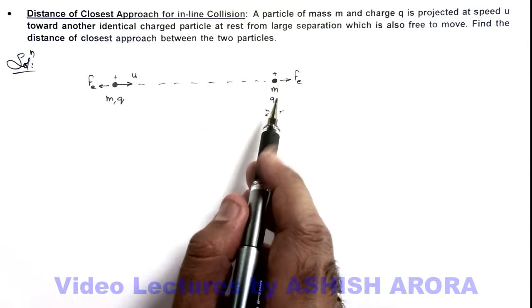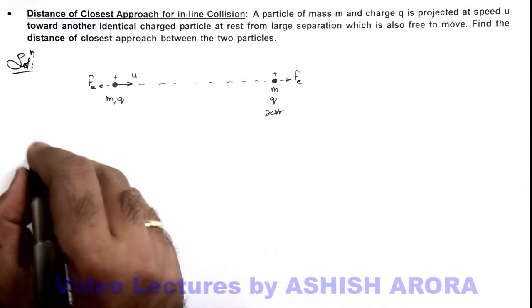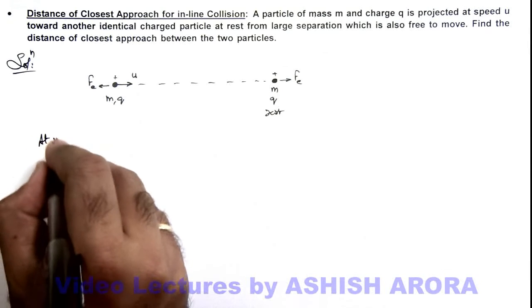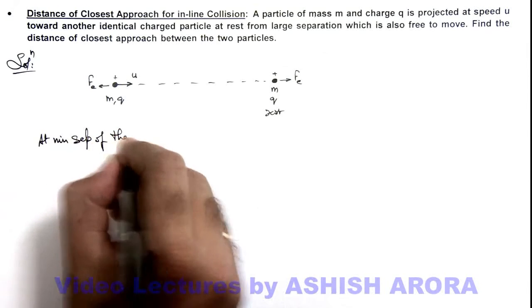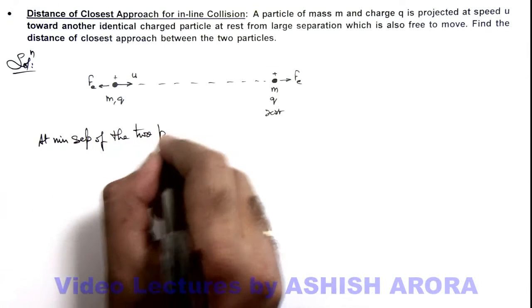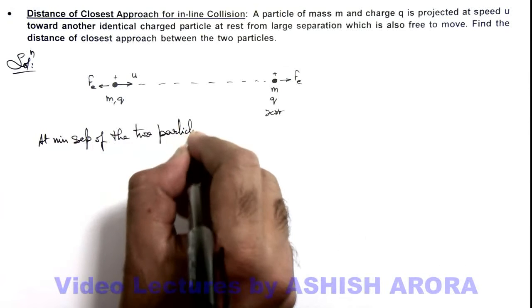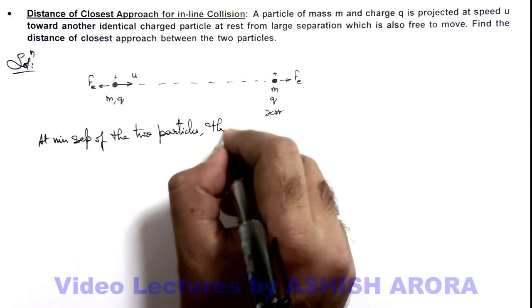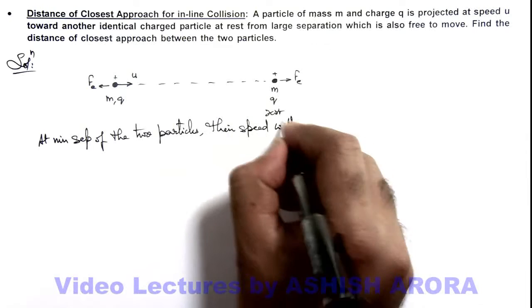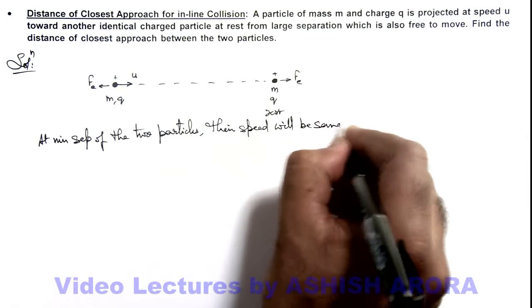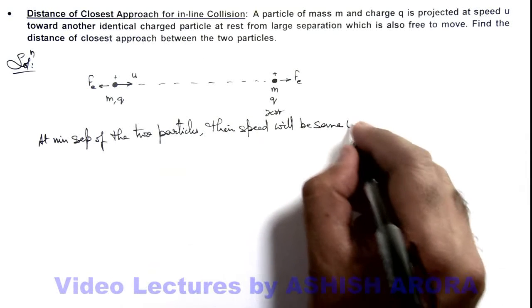In this situation we can write, at minimum separation of the two particles, the speed will be seen. Say it is taken as v.